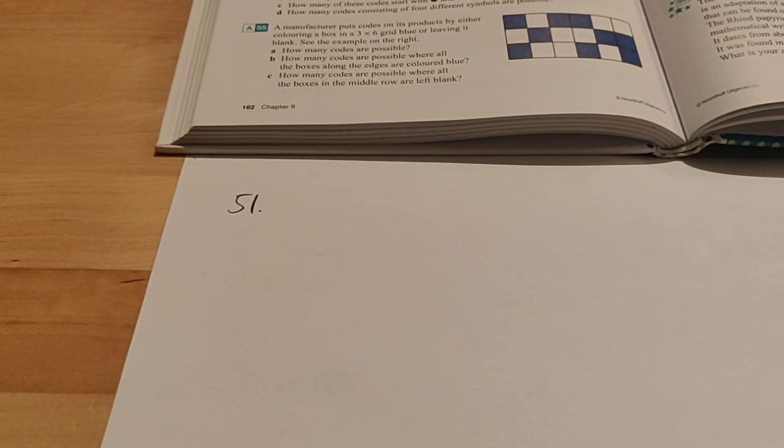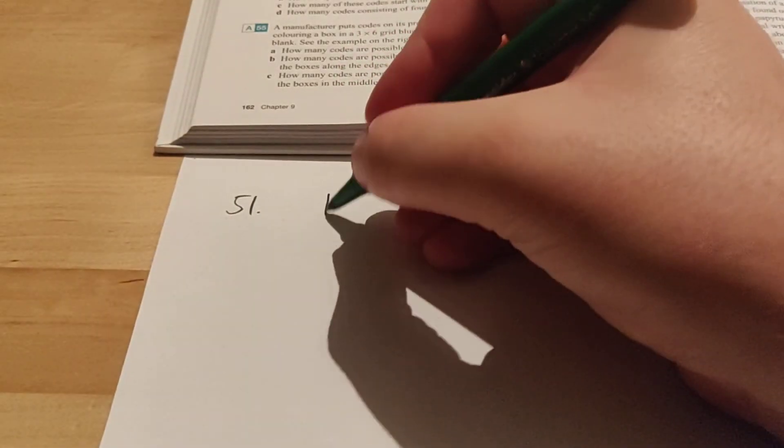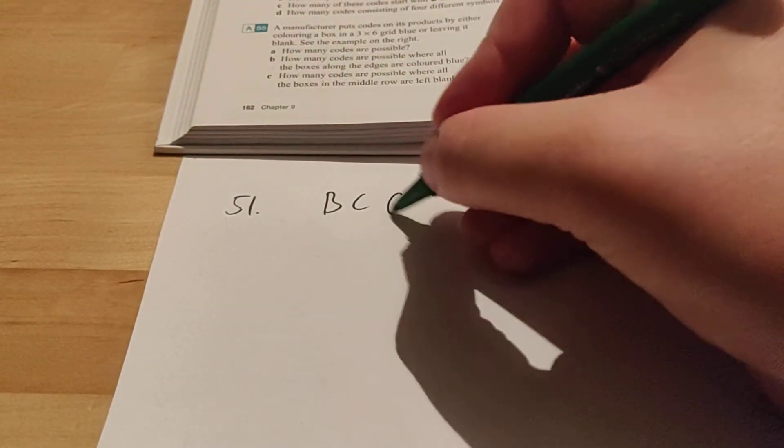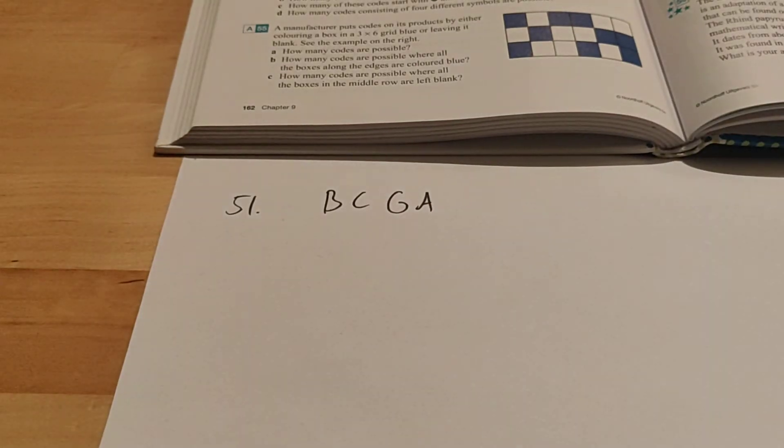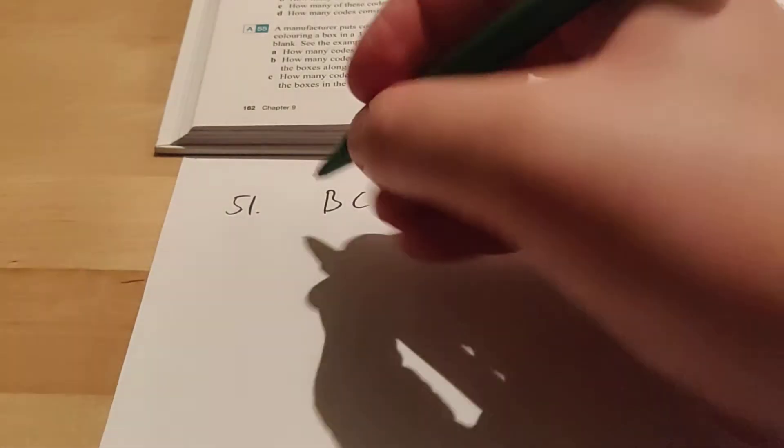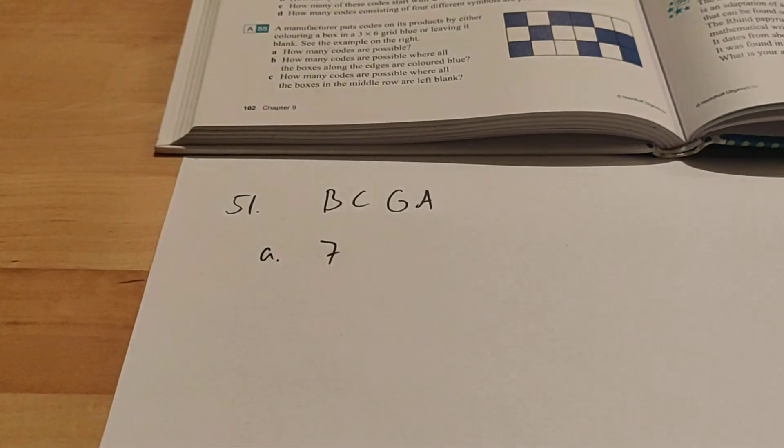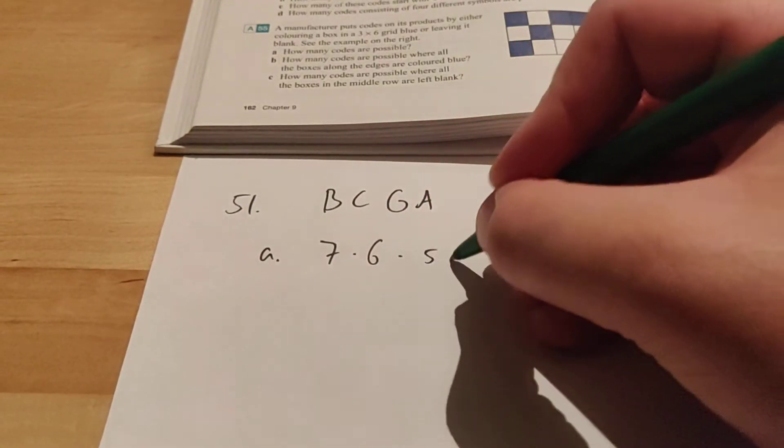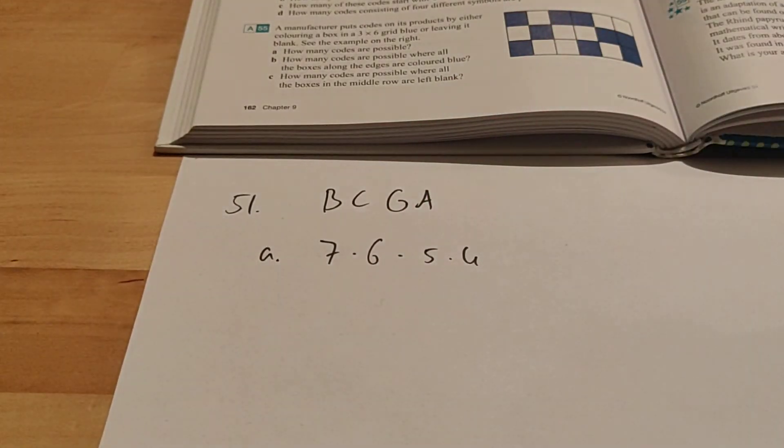So if he wants to make a four letter code, that means that, for example, this is a four letter code. It's B, C, G, A. That's one of the codes he can make, right? For the first letter, he has seven different options, one of those seven letters that we have. Then he uses one, so he can't use it again. So after that, he has six options. After that, he has five options. And after that, he has four options.